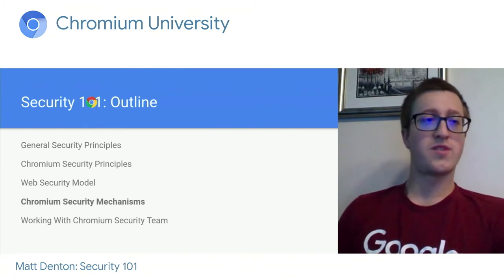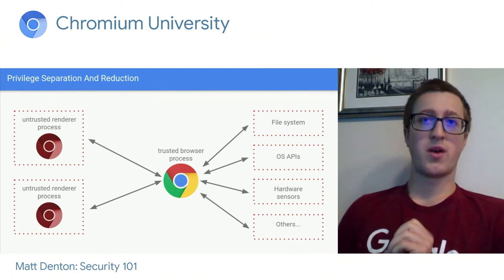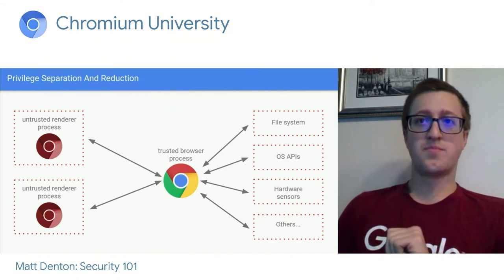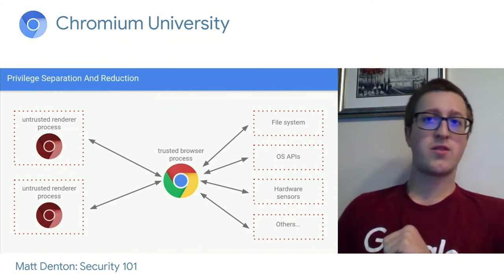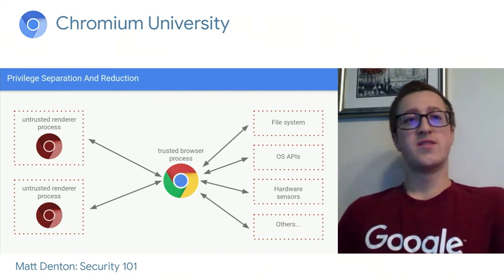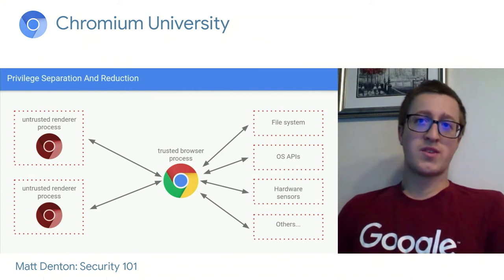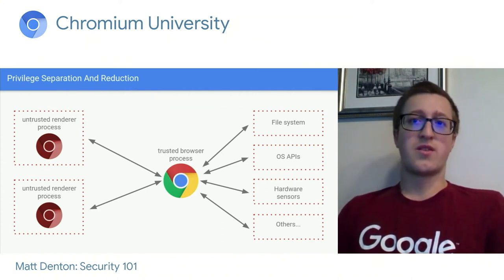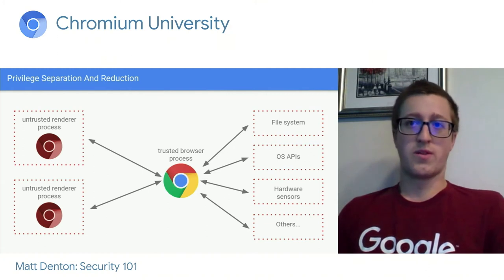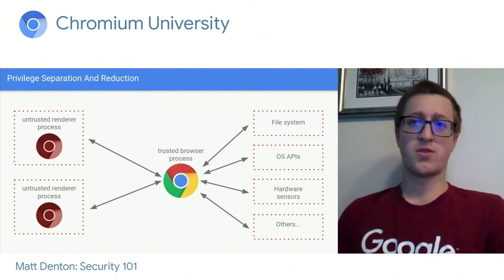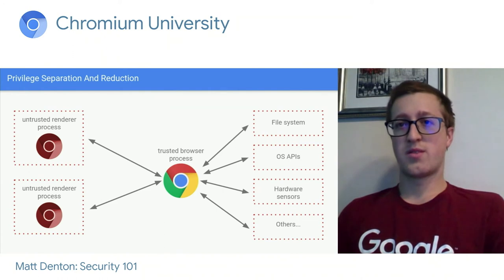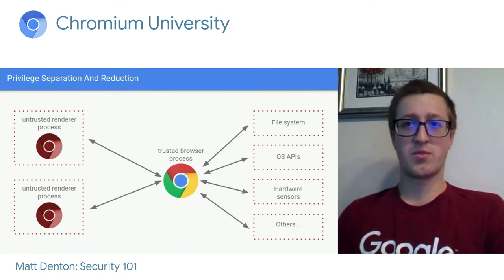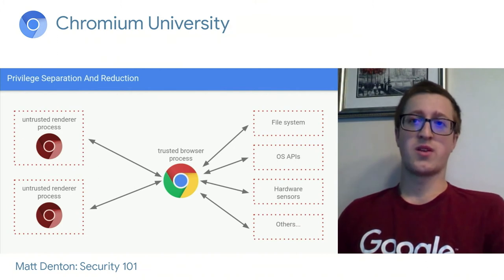Moving on to Chromium the browser: we have to enforce this ambitious security model, and that requires defense in depth. Chromium is millions of lines of C++ code, and we have to assume there are bugs in how the browser parses, runs, and renders websites. For example, the JavaScript engine might have a bug allowing one window to control another site's window, or the HTML parser might have a buffer overflow so a malicious site can execute arbitrary native code in the parser's process instead of just JavaScript.